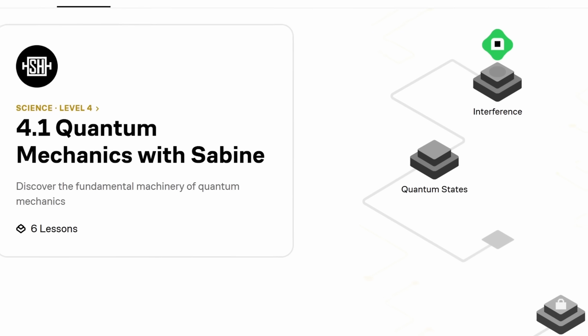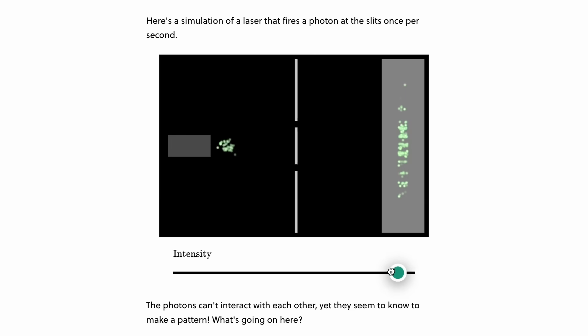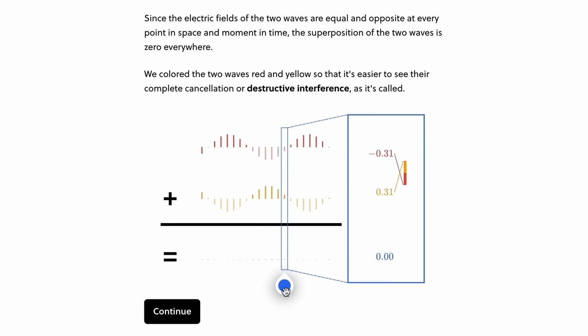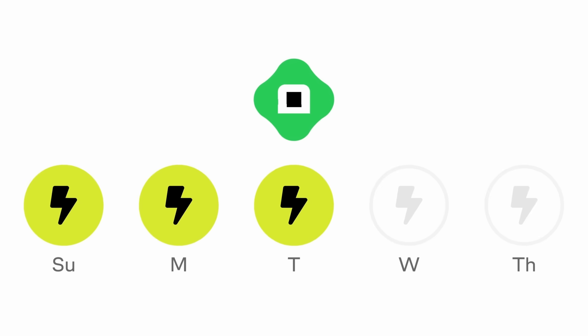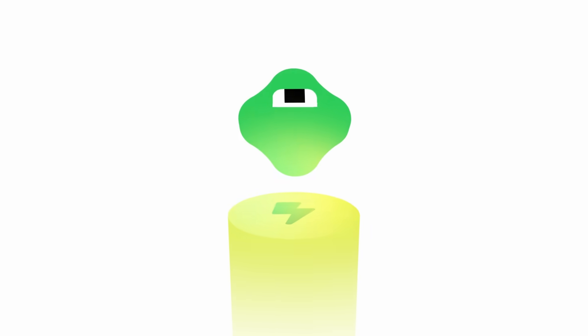I even have my own course on Brilliant. That's an introduction to quantum mechanics. It'll help you understand what a wave function is and what the difference is between superpositions and entanglement. It also covers interference, the uncertainty principle, and Bell's theorem. And after that, you can continue maybe with their course on quantum computing or differential equations.